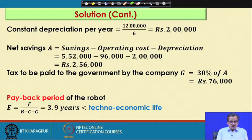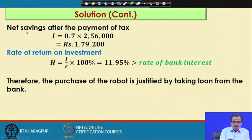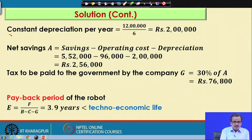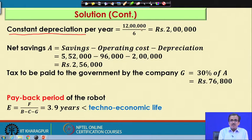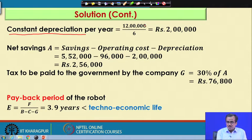Now, the depreciation of this robot per year is nothing but the constant depreciation, which I have considered for simplicity. While calculating this particular depreciation, we should not consider the installation cost. By definition, depreciation is the falling value of an asset. So, we will have to consider the cost of the robot with accessories only, but not the installation cost. That is why, for calculating the depreciation, we consider rupees 12 lakhs divided by 6, but not rupees 15 lakhs divided by 6. So, the constant depreciation per year is coming to be equal to rupees 2 lakhs.